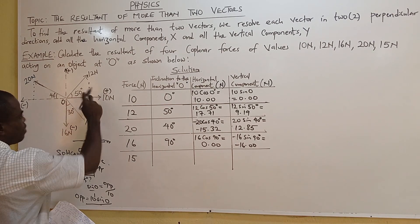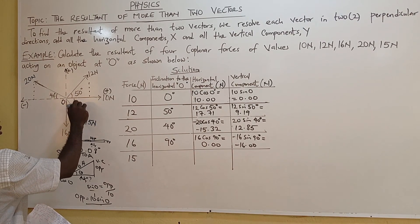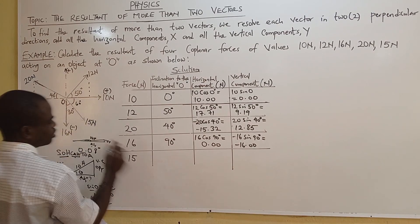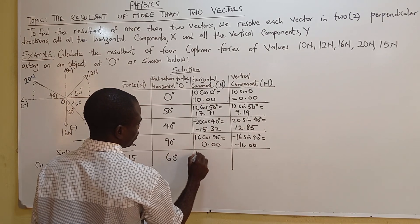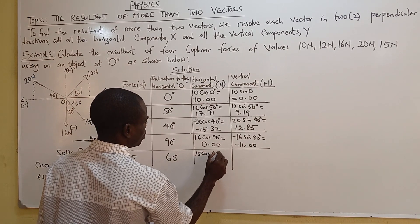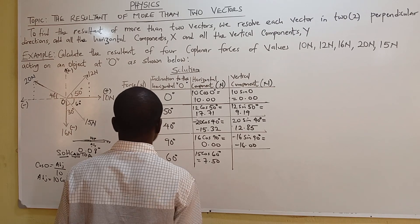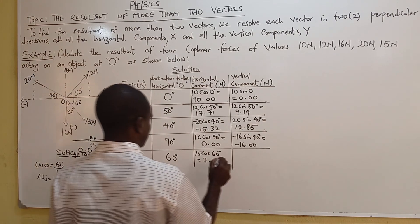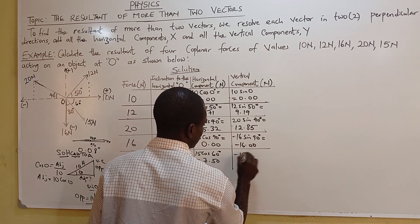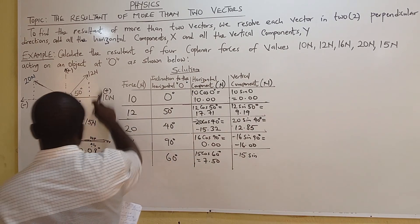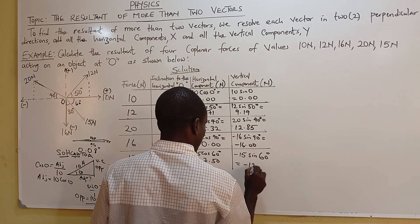The last vector is 15N. Its inclination to the vertical axis is 30°, so the inclination to the horizontal axis is 90° − 30° = 60°. It is on the positive horizontal side, so: 15·cos(60°) = 7.50N. For the vertical component, it is toward the negative side: −15·sin(60°) = −12.99N.